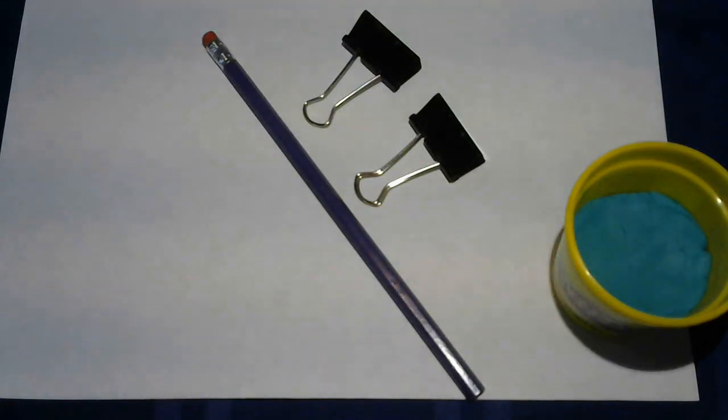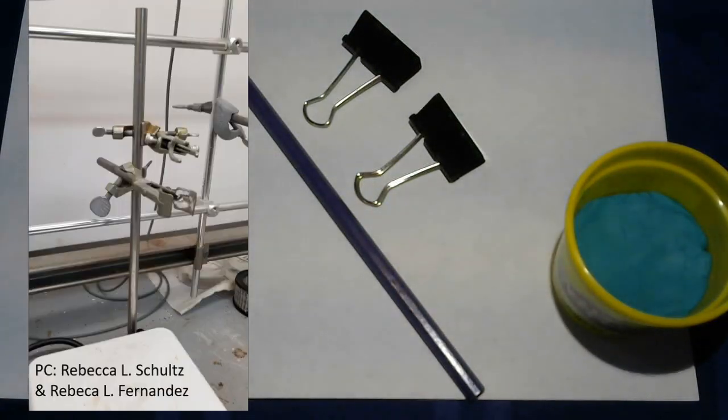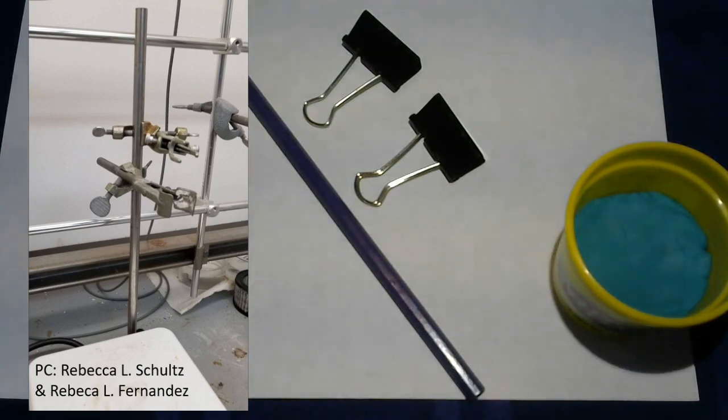The first setup we'll need to do for this experiment is to make a ring stand. Ring stands are commonly used in the lab to hold equipment. Today we'll be making a ring stand at home out of a pencil, modeling clay, binder clips, and tape.